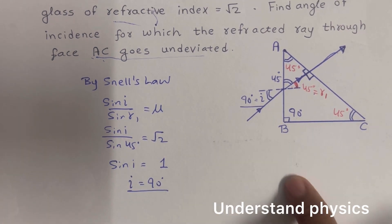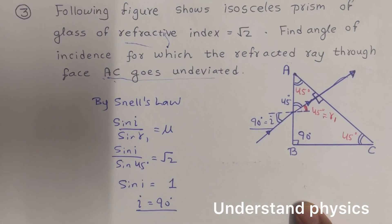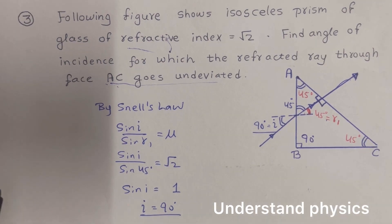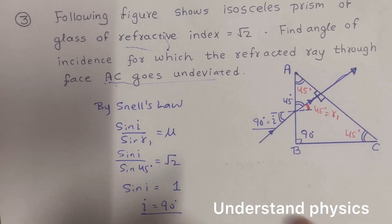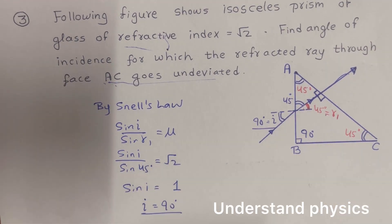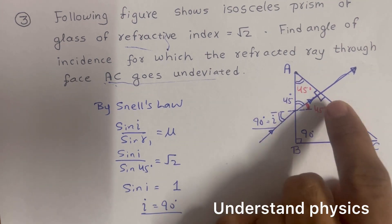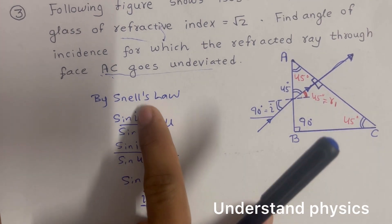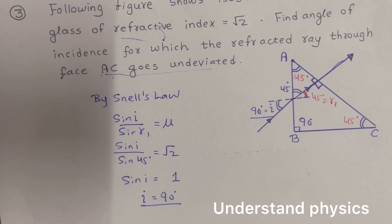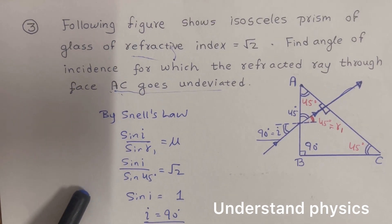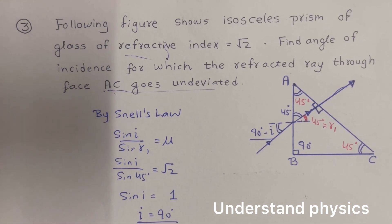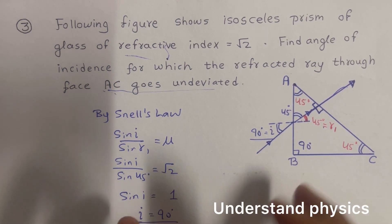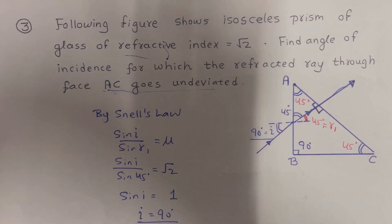So if we want the ray to emerge undeviated from face AC, the angle of incidence must be nearly 90 degrees — that is, grazing incidence. The diagram plays a major role here; understanding how to derive these angles is key, and then Snell's law gives the result directly. These three problems on optics are now complete.